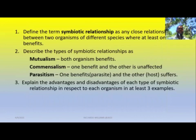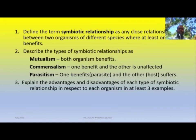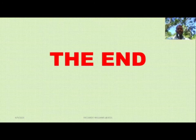In summary: we defined a symbiotic relationship as any close relationship between two organisms where at least one benefits. We described the three types — mutualism, where both organisms benefit; commensalism, where one organism benefits and the other is unaffected; and parasitism, where one organism (the parasite) benefits and the other (the host) suffers. We looked at at least three examples for mutualism and commensalism, and four examples for parasitism, explaining the advantages and disadvantages for each organism involved. Thank you very much, have a wonderful day.